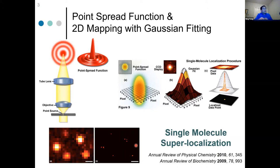Accumulating these localization dots gives us a reconstructed image of our sample, with dynamic information encoded in the time axis. Our lab has two major research directions: single molecule chemical imaging — understanding diffusion through nanopores, nanoconfinement effects, and recently 2D materials — and single particle tracking in live cells, following plasmonic nanoparticles to understand how they are transported and how they interact with cell membranes, often related to molecular motors. Today's talk is completely focused on single molecule chemical imaging.